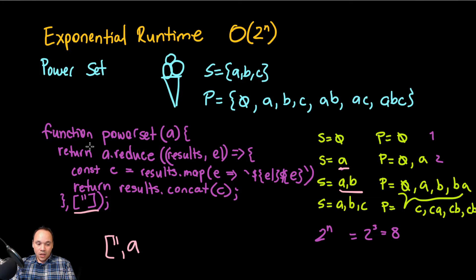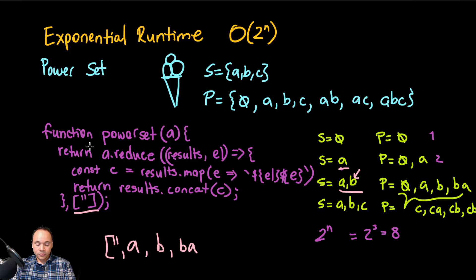In the next iteration element is b and results is [empty, a]. We append b to every element in results: b + empty is just b, and b + a is ba. So c is [b, ba]. That gets added to the results, giving us the final result: [empty, a, b, ba] — all four subsets of {a, b}. And that's it.